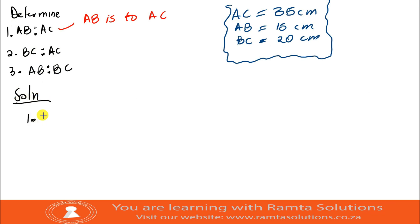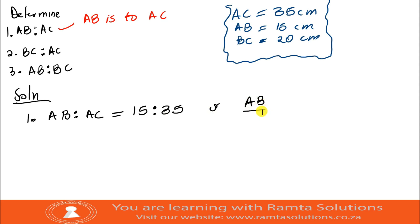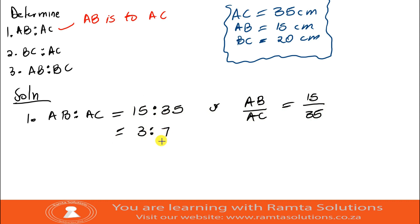Solution number one: AB is to AC equals 15 centimeters over 35 centimeters. You can also represent this as AB over AC = 15/35. Simplifying — the highest common factor is 5 — your calculator returns 3 over 7. So the ratio AB : AC = 3 : 7.